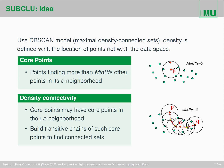Everything in the epsilon neighborhood of a neighboring core point should also be in the same cluster, and so on. You can have transitive chains of core points finding core points in their epsilon neighborhood. They should all be in the same cluster, because as long as you follow this chain, you don't leave the dense area. This is captured by density connectivity — core points may have core points in their epsilon neighborhood, and we build transitive chains to find connected sets.